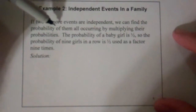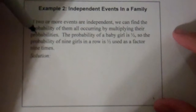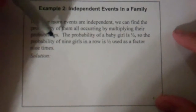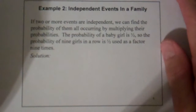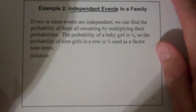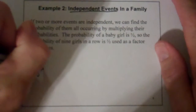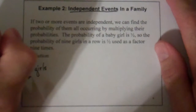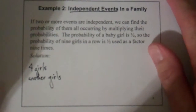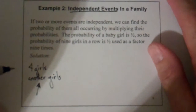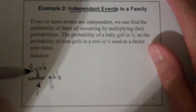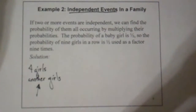If two or more events are independent, we can find the probability of them all occurring by multiplying their probabilities. The probability of a baby girl is one half. So the probability of nine girls in a row is one half used as a factor nine times. Now, what they're assuming here is that this is an independent event. But as somebody who has four girls, and my wife is pregnant — I'm really expecting another girl. It has to do with body chemistry really affecting whether we're going to have a boy or a girl. As long as you're not changing partners, the body chemistry acts in such a way that these are not independent events. But let's assume that they are.